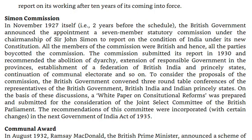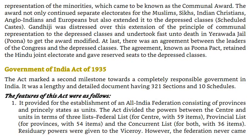Communal Award. In August 1932, Ramsay MacDonald, the British Prime Minister, announced a scheme of representation of the minorities, which came to be known as the Communal Award. The award not only continued separate electorates for the Muslims, Sikhs, Indian Christians, Anglo-Indians and Europeans, but also extended it to the depressed classes (scheduled castes). Gandhiji was distressed over this extension of the principle of communal representation to the depressed classes and undertook a fast unto death in Yerawada jail, Pune, to get the award modified. At last, there was an agreement between the leaders of the Congress and the depressed classes. The agreement, known as the Pune Pact, retained the Hindu joint electorate and gave reserved seats to the depressed classes.